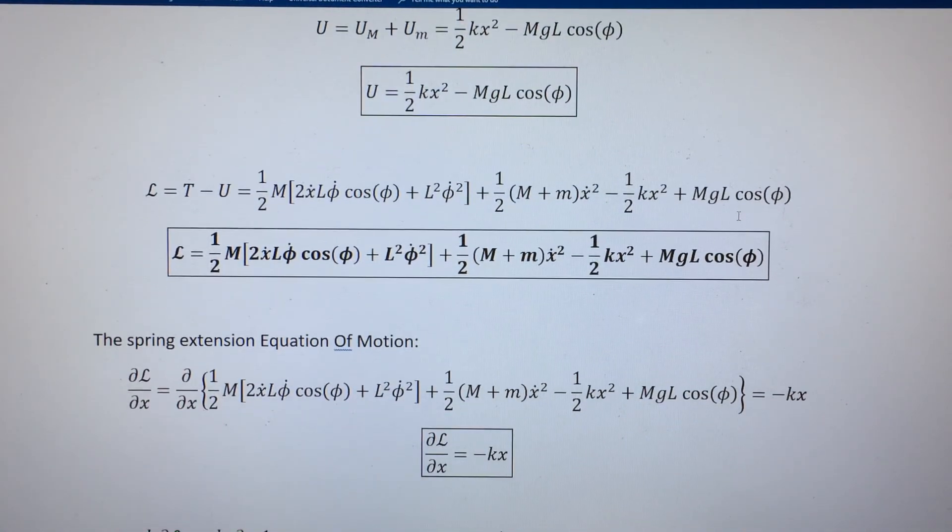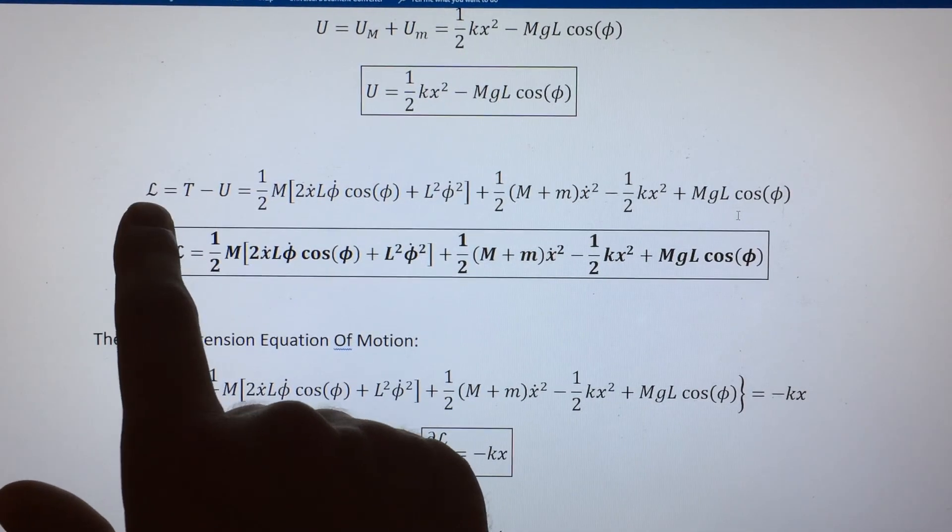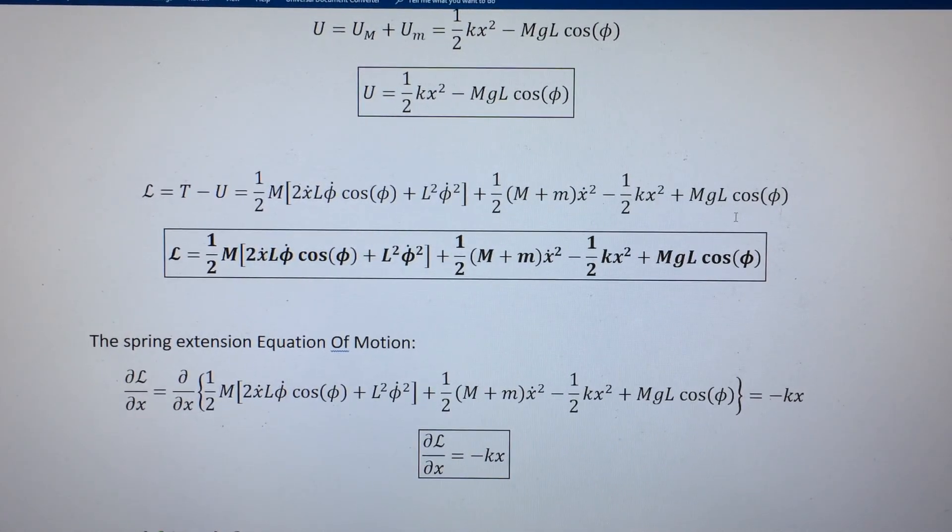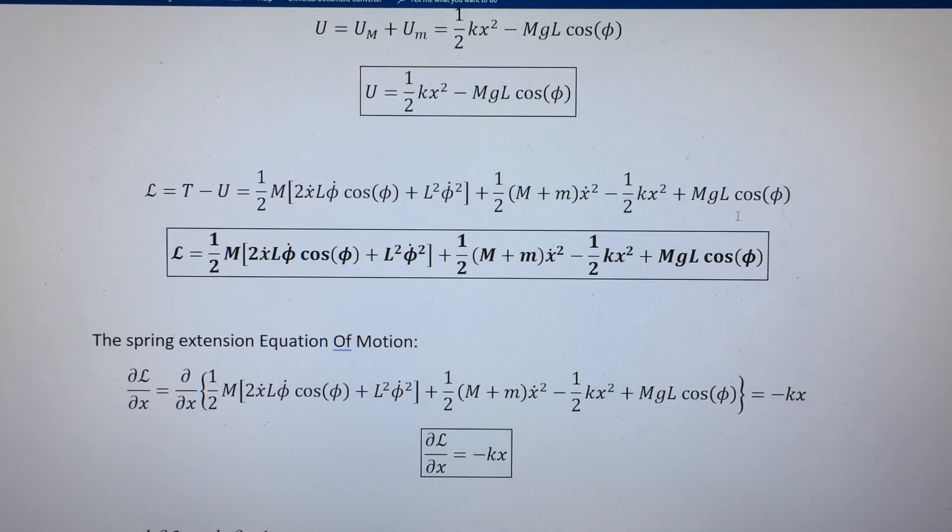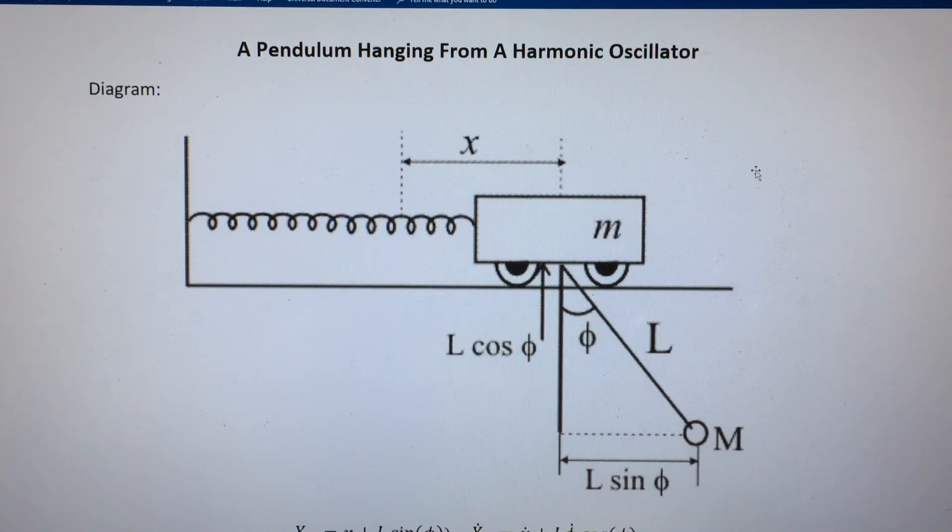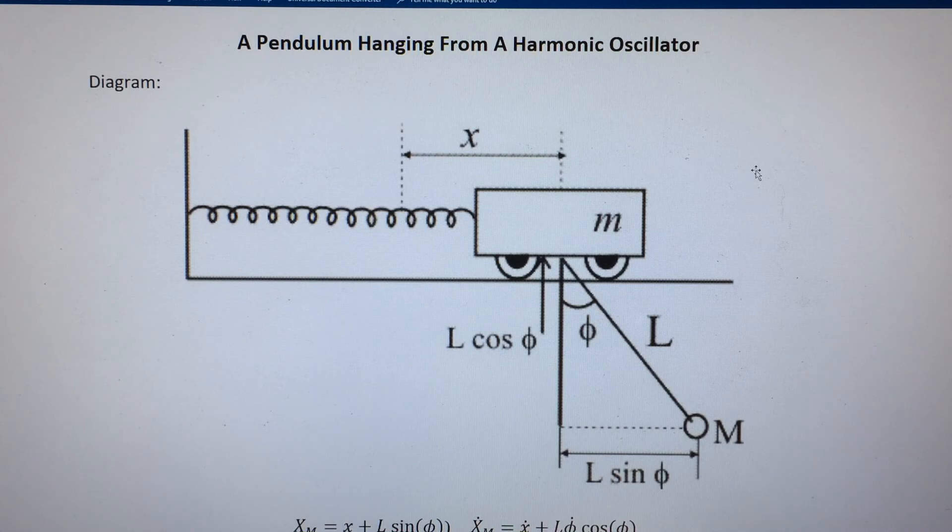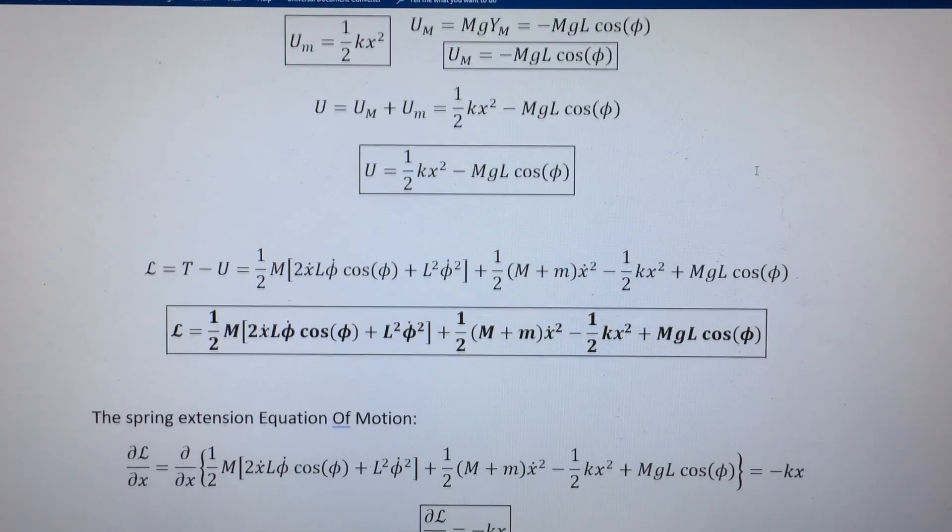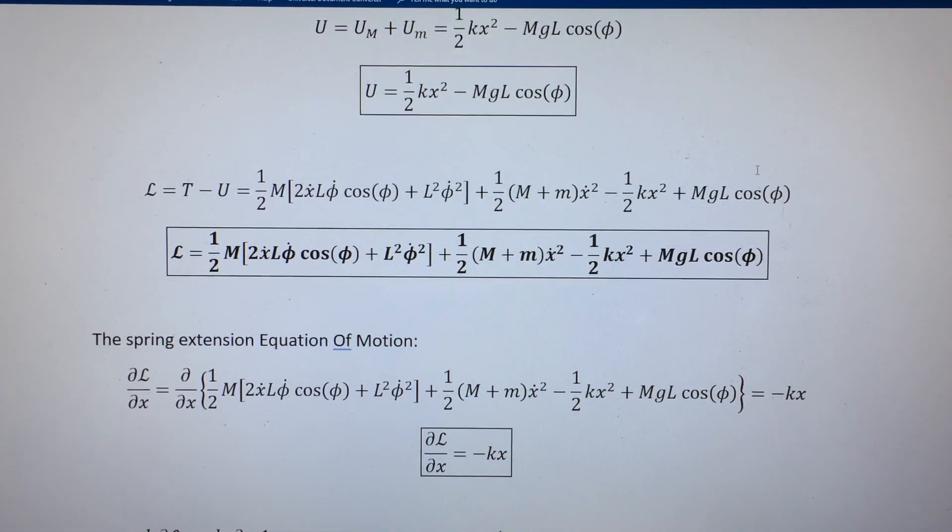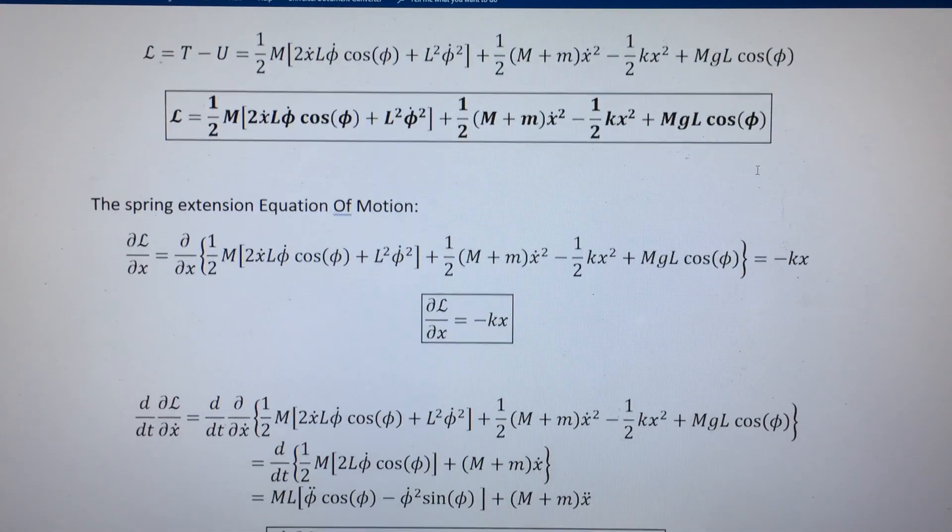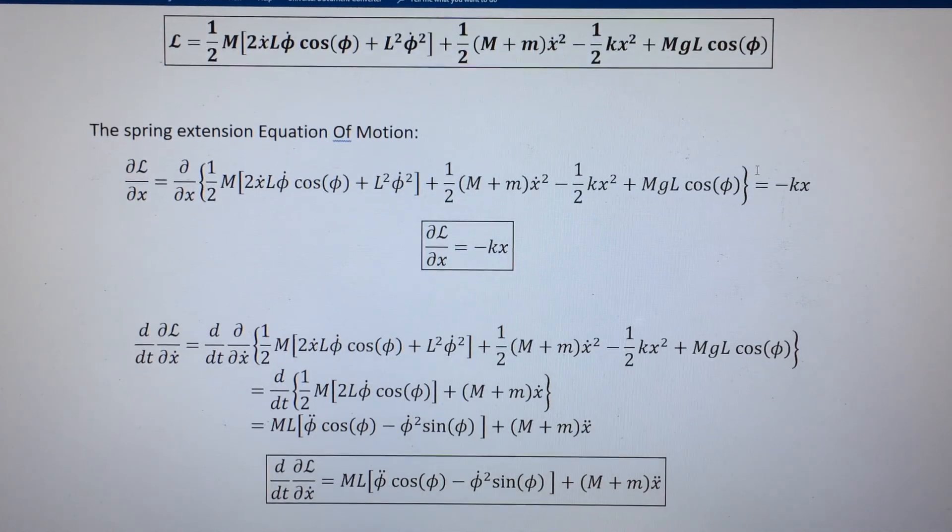The Lagrangian, famously, is just T minus U. Usually I have a non-script capital L for the Lagrangian, and I save the script L for Lagrangian densities in field theory. But this time, the diagram that I found on Google for this system uses capital L for the pendulum length, so I couldn't use that for the Lagrangian, so I used script L, even though it's not a Lagrangian density. It's just a straight-up mechanics Lagrangian. That's why the script L is the way it is for the Lagrangian, because I'm using L for the pendulum length.